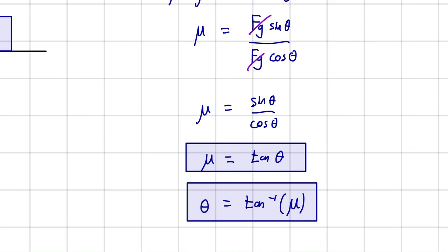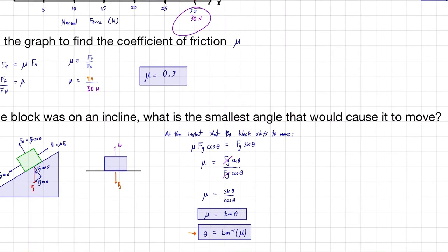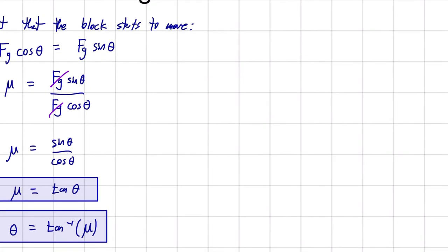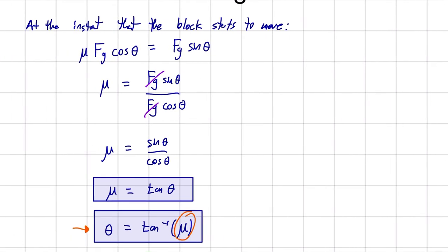So in this case, we're going to be using this equation because we want to solve for theta - what is the smallest angle. All we're going to do is we're going to plug in our value for mu.